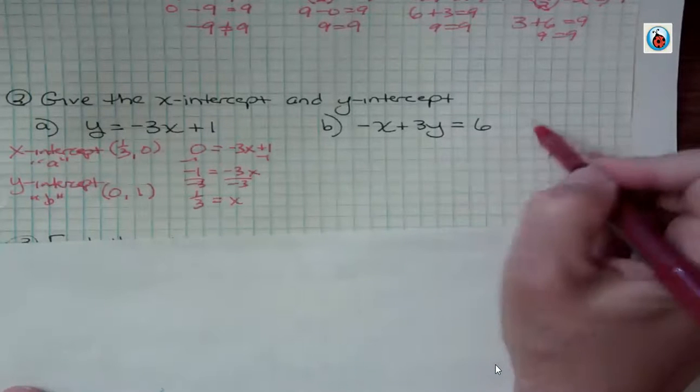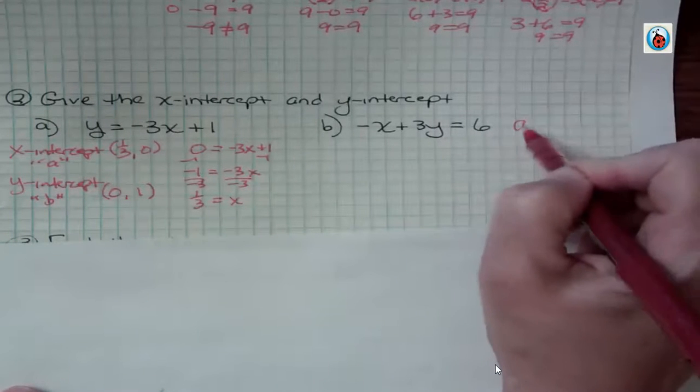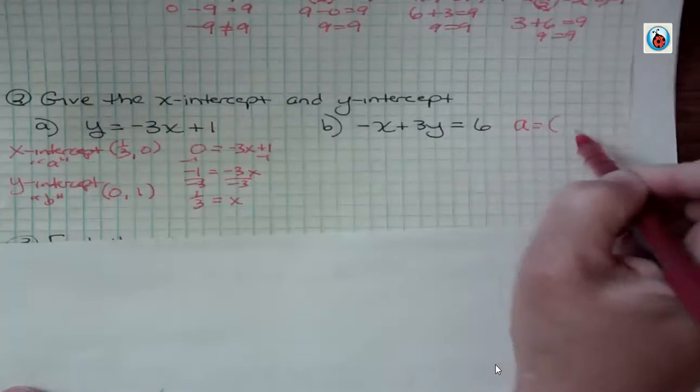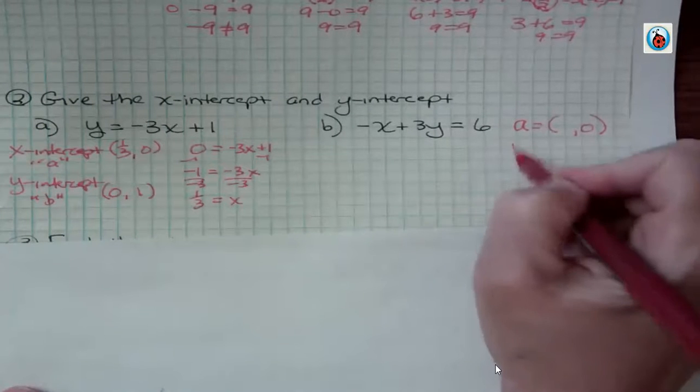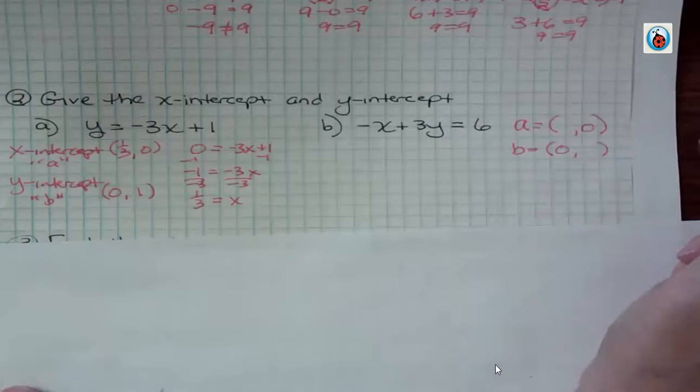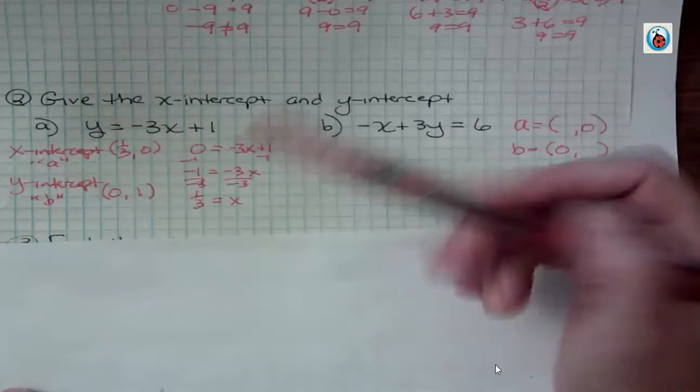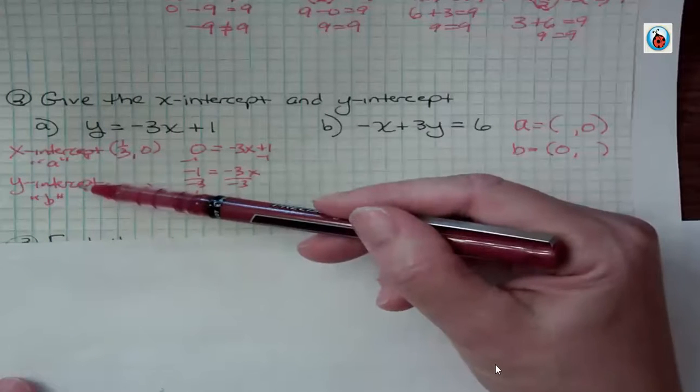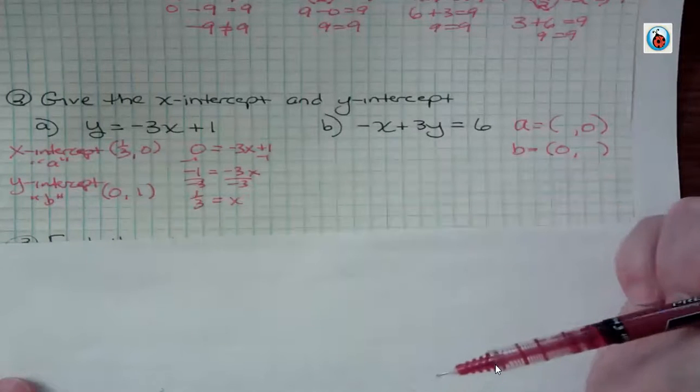For this one, what if I want to know the x-intercept? I'll call it A. Then I make y 0. If I want to know the y-intercept, then I make x 0. All right, these are the points where the graphs cross the x-axis and the y-axis. That's what the importance of intercepts are.